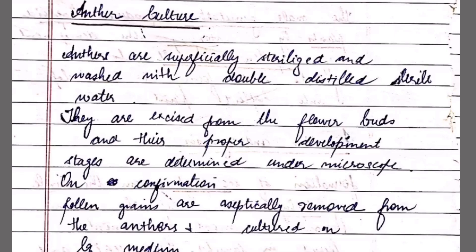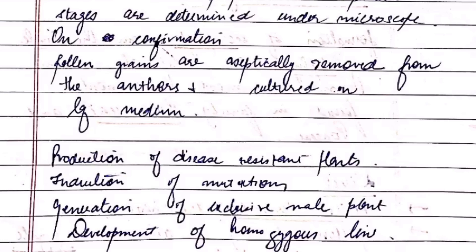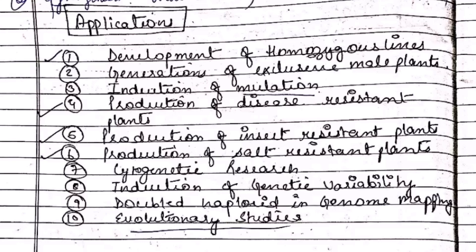Androgenesis is the haploid production via anther and pollen. In previous videos on plant regeneration techniques, I have covered anther culture, pollen culture, ovule and ovary culture in detail — you can refer to those slides for androgenesis and gynogenesis. Applications of haploid production include development of homozygous lines, induction of mutation, production of disease-resistant plants, and evolutionary studies, among others.